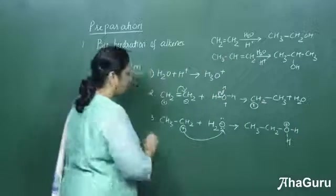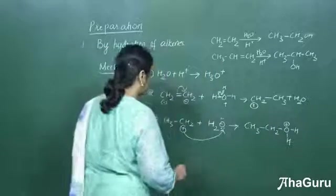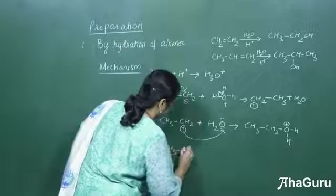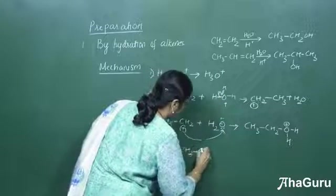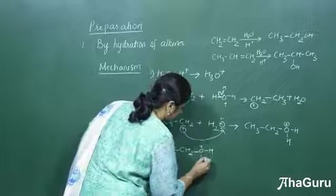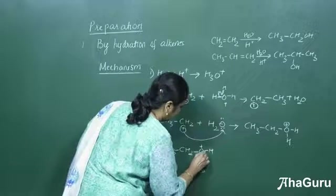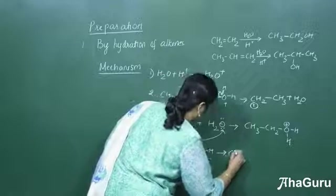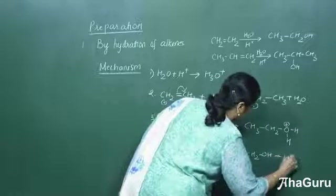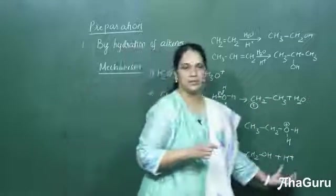In the last step, deprotonation of hydrogen takes place from the alcohol. The H⁺ is lost — the bond electrons move accordingly — giving CH₃CH₂OH plus H⁺. So the acid catalyst used is regenerated in the last step.